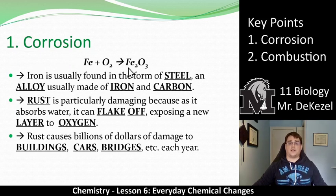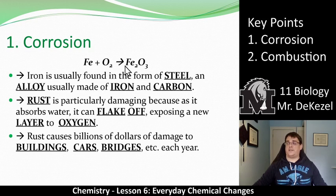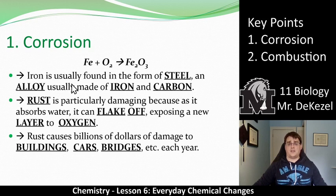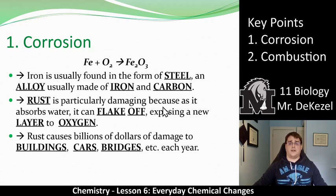This is what rust looks like — iron and oxygen. Iron is Fe, which is a little strange; we'll talk about that more in the next lesson. Iron is Fe and oxygen is O, and combined together you get Fe and O — that is rust. Iron is usually found in the form of a steel alloy, made from iron and carbon. Rust is particularly damaging as it absorbs water. It can flake off and expose a new layer to oxygen, and then that will rust, and expose the next layer, and that will rust.